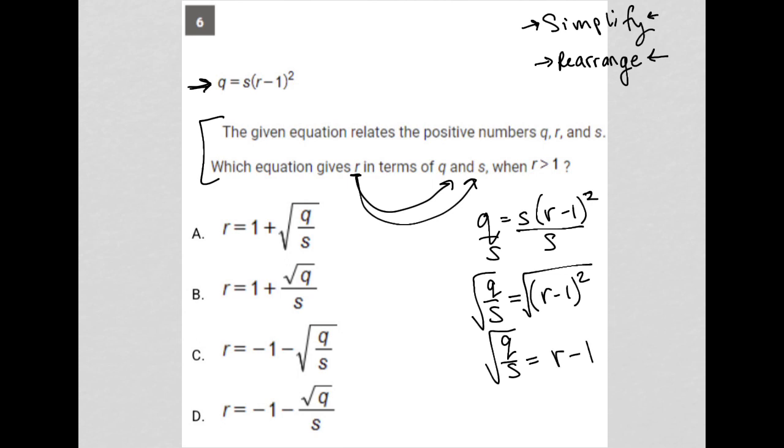And of course, the last step is to add one to both sides. So add one, add one. I'm going to go up here for more space. So what I'd have is one plus the square root of Q over S is equal to R.